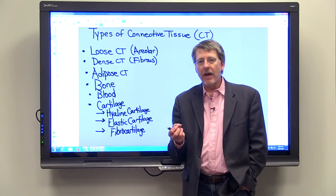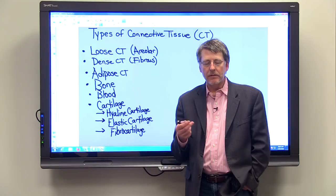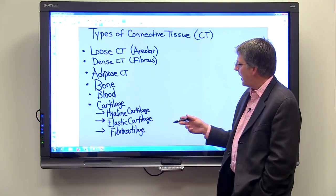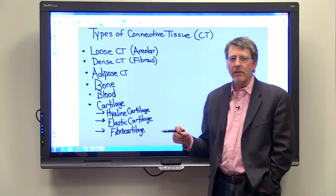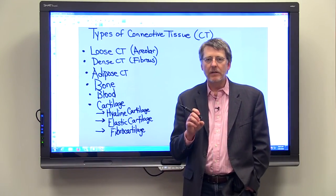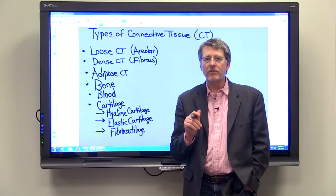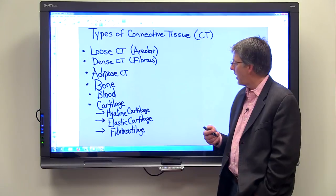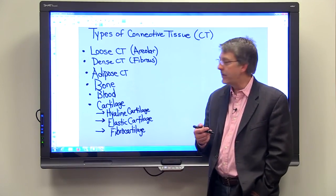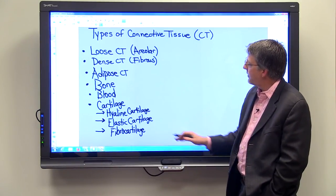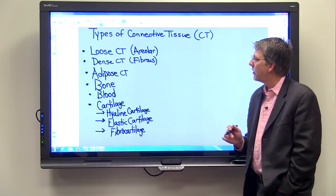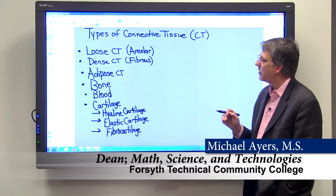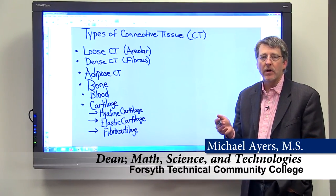Fibrocartilage is cartilage that has a lot of fibrous connective tissue — fibers made out of collagen. It is extremely tough, able to take a lot of stress and shock, and we find it in places like your knees and in the intervertebral discs. So these are the connective tissues you need to be familiar with, and in the next segment we're going to look at each of these tissues and talk about their structure and function in more detail.